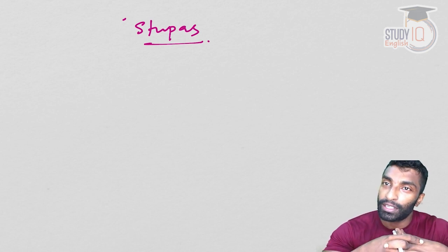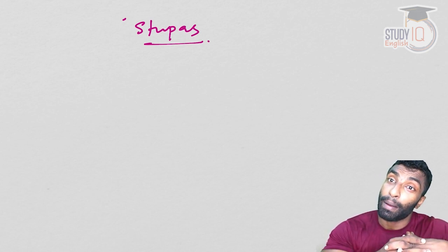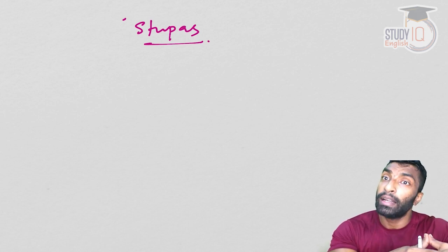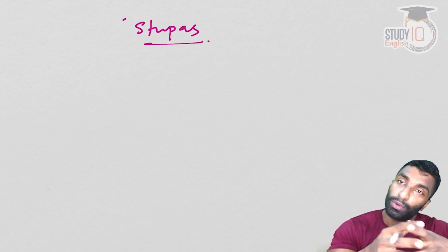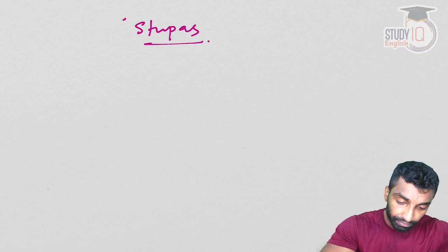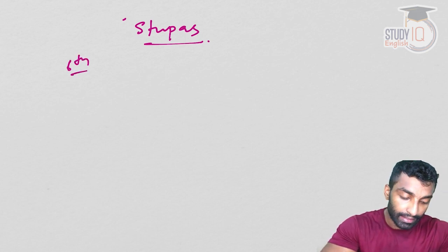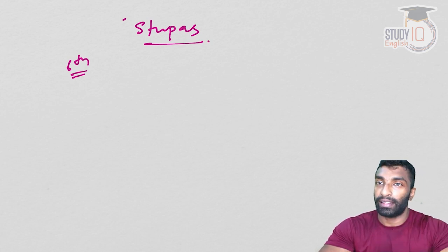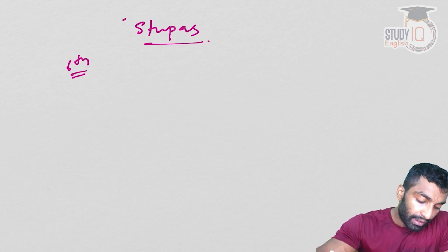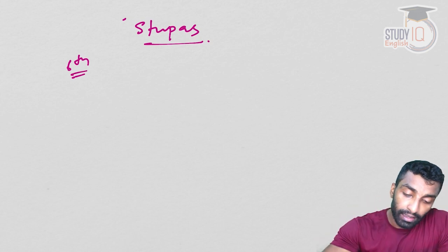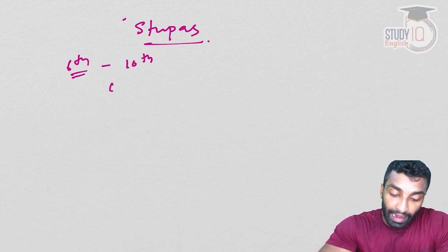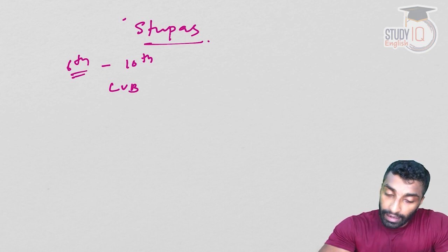If you ask whether the concept of Stupas was there even before Buddhism or before Buddha — yes, it was there. When we talk about Buddha, it is the 6th century BC that we are actually discussing. If you see this period, 6th to 10th century, which is your later Vedic period.